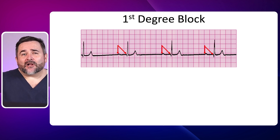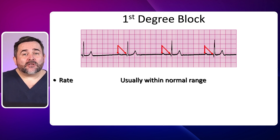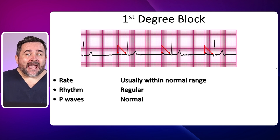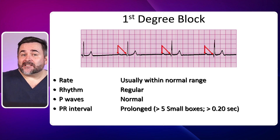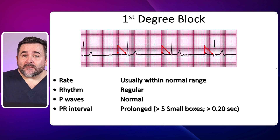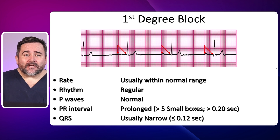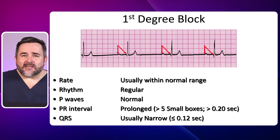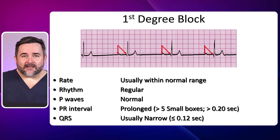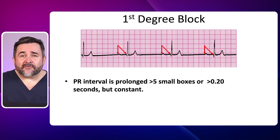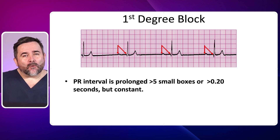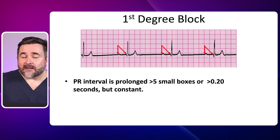Let's review heart blocks and start with first degree block. The rate is usually within normal range, the rhythm is regular, P waves are present and there is one P wave for every QRS. The PR interval is prolonged, meaning more than five small boxes or more than 0.20 seconds, but it remains constant. The QRS is usually narrow and there is one QRS for every P wave, meaning one to one conduction. The main concept to remember for your NCLEX is that in first degree block the PR interval is prolonged more than 0.20 seconds but remains constant.